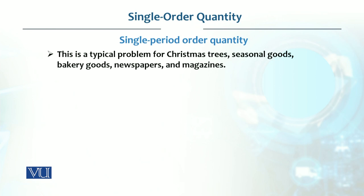This is the single period order quantity model. Examples include Christmas trees, seasonal goods, and newspapers — all items that lose value after a specific period.